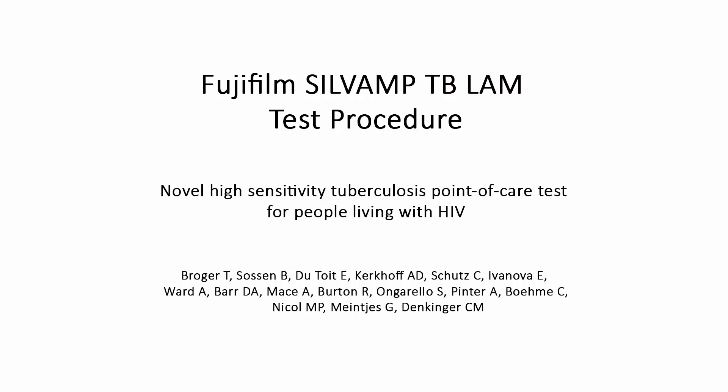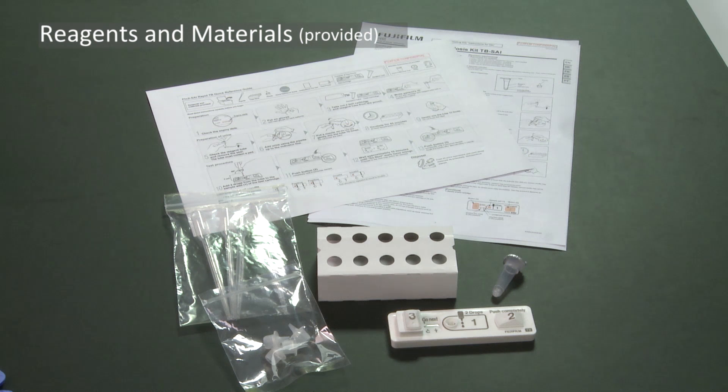The Fujifilm Silvamp TB-LAM is a urine-based in vitro diagnostic test for the detection of active tuberculosis. The following reagents and materials are included in the test kit.